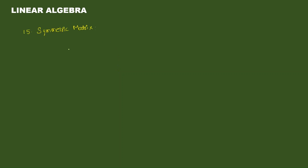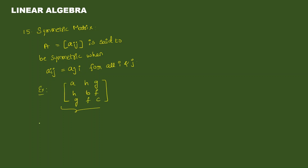Next — symmetric matrix. A square matrix A with elements aij is said to be symmetric when aij equals aji for all i and j. Simply, A transpose equals A. Example matrix with elements A, H, G / H, B, F / G, F, C — transposing gives the same matrix. So namha transpose pannanak kuda same adhe matrix tham varudhu — this is a symmetric matrix.